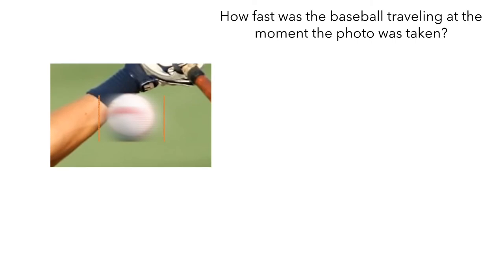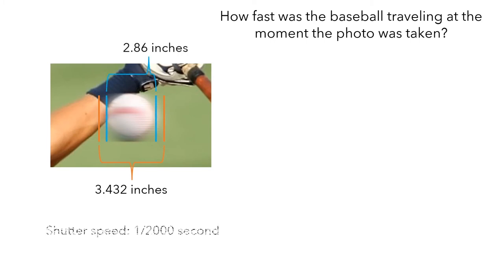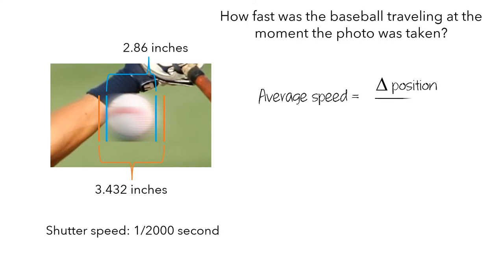The blur in the ball is 3.432 inches long. The diameter of a baseball is 2.86 inches. For this picture, the camera shutter was open for one two-thousandth of a second. We know that the average speed of the baseball is equal to the change in the position of the baseball divided by the change in time. We know the change in time is one two-thousandth of a second.